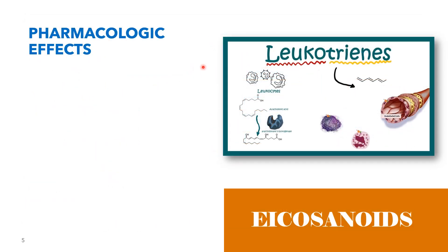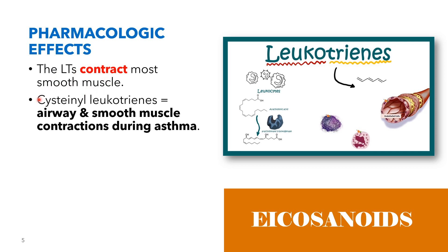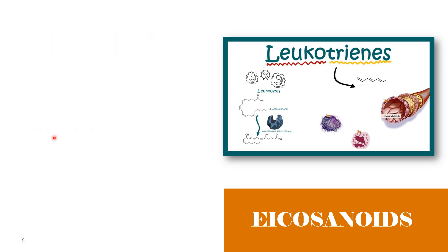For the pharmacological effects of the leukotrienes: leukotrienes contract most smooth muscle. The cysteinyl leukotrienes — LTC4, D4, and E4 — are responsible for airway smooth muscle contractions during asthma. They also play roles in various other inflammatory processes in vascular and skin diseases.